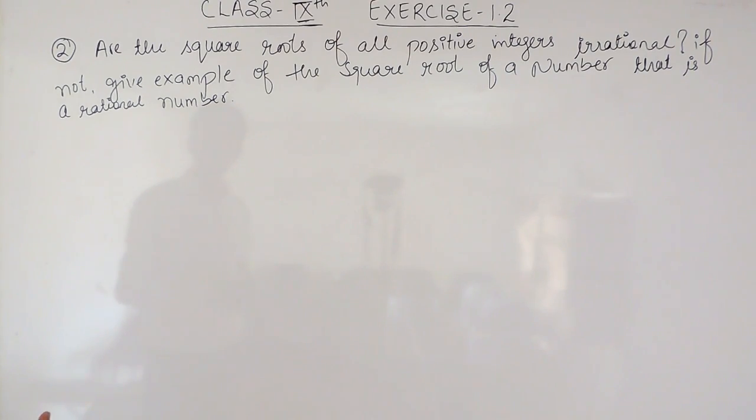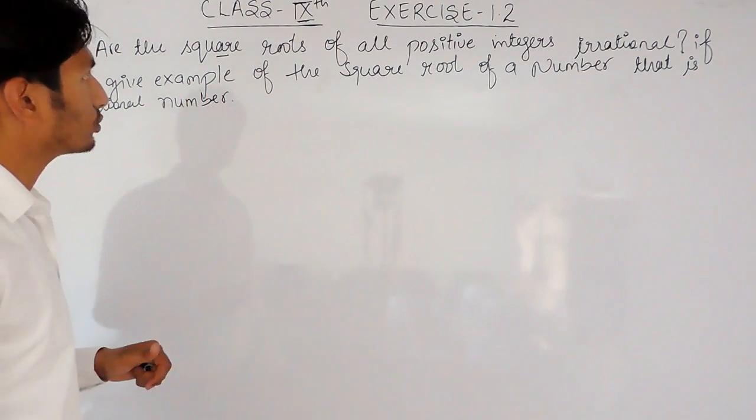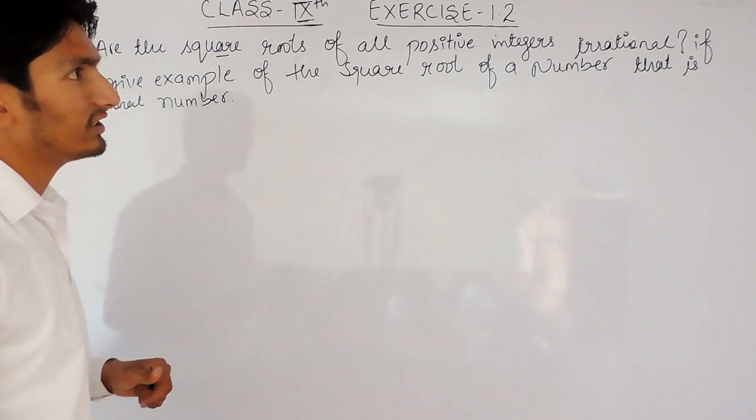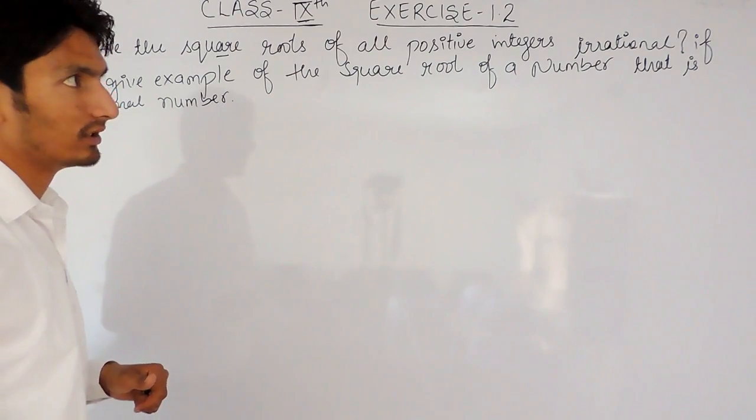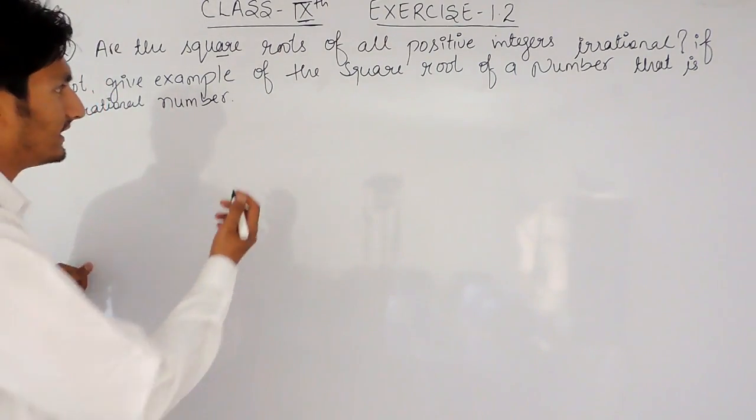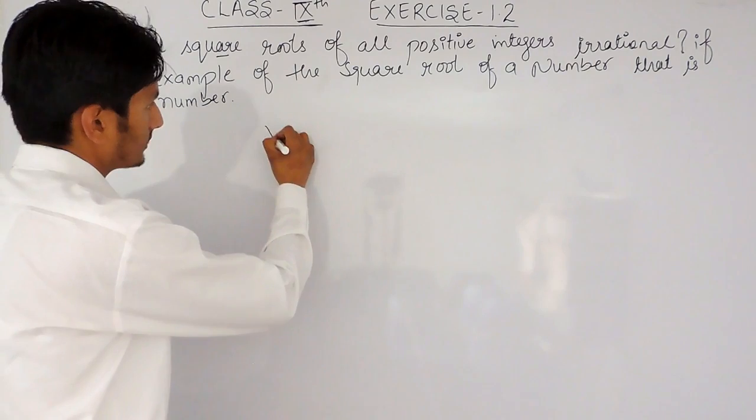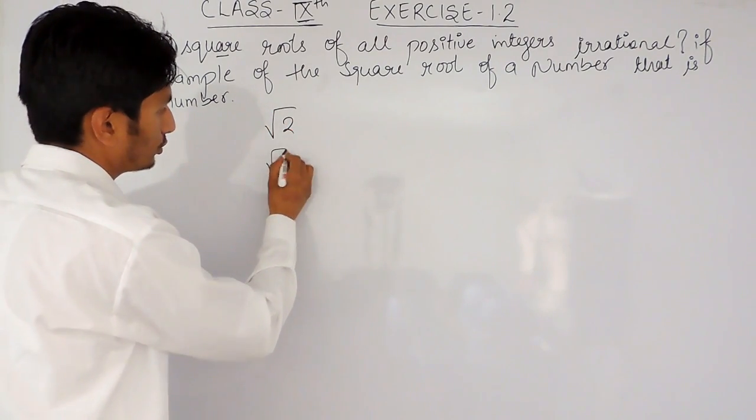Now it is asked, are the square roots of all positive integers irrational or not? So obviously they are not, because if I talk about root 2, root 3, root 5, obviously these are irrational numbers.